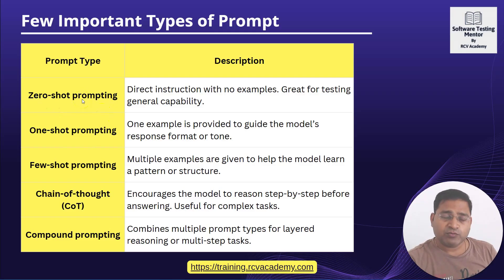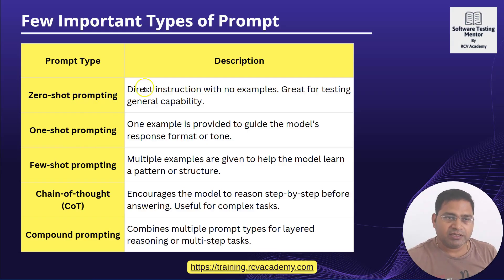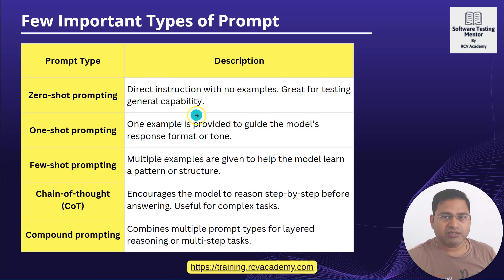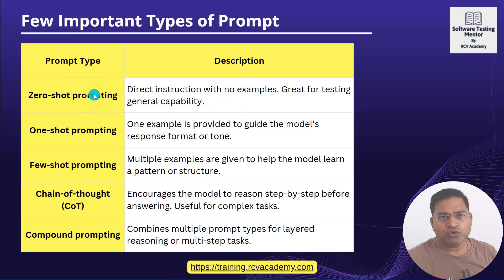The first one we are going to understand is zero-shot prompting. Zero-shot prompting is the direct instruction with no examples at all. This is great for testing the general capability of a large language model or whatever model you are using. So if you don't provide any example, that's known as zero-shot prompting.